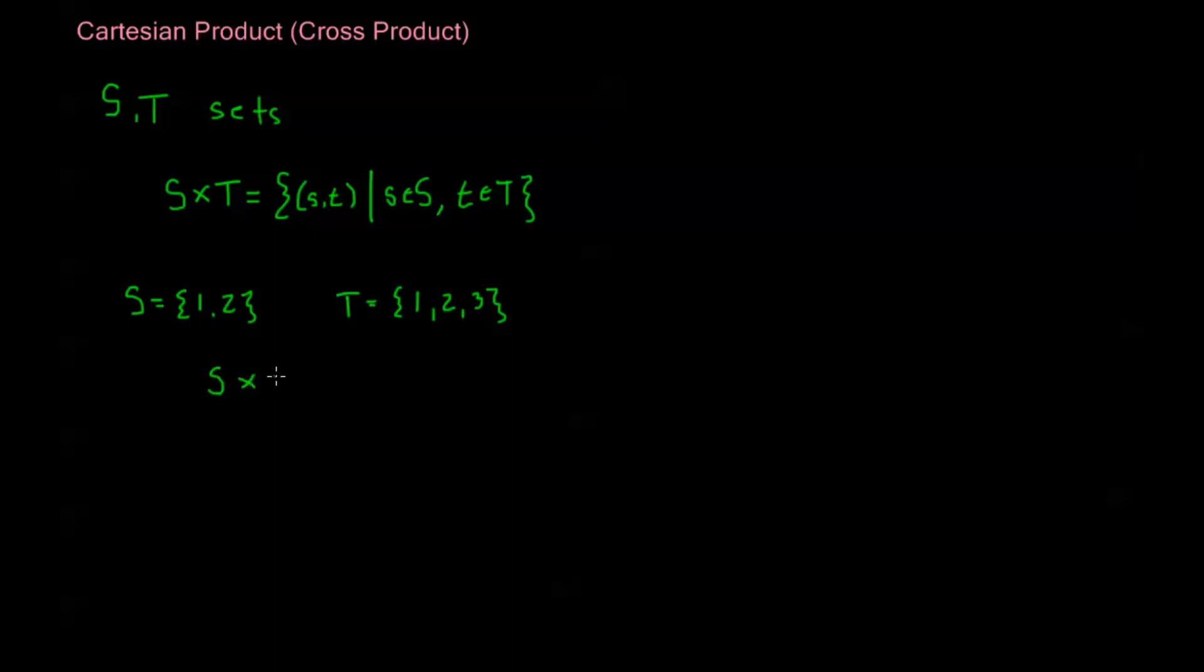Then my Cartesian product, S cross T, this is going to be a bunch of ordered pairs. So I'm going to have (1,1), (1,2), (1,3),